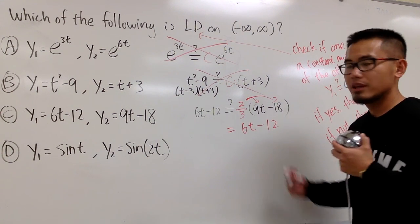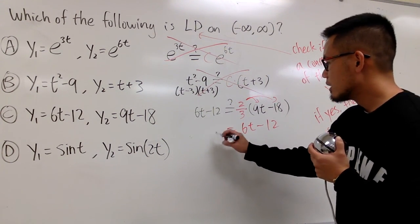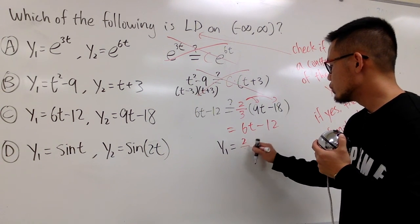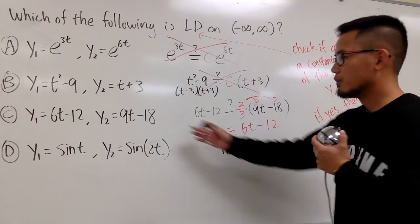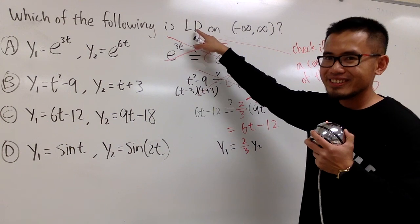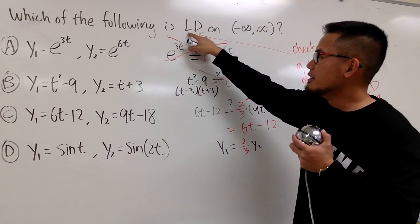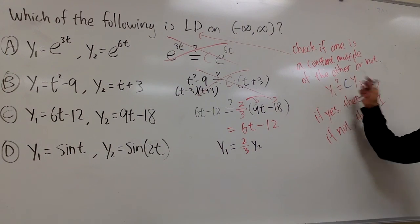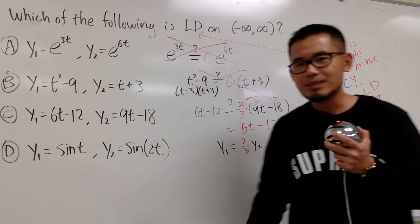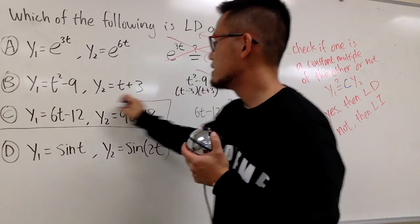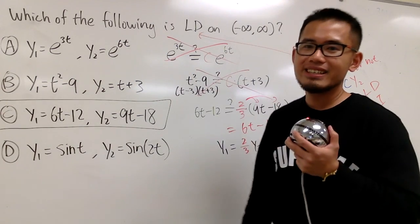2 over 3 times negative 18 is exactly minus 12. This and that match. So, I show you that y₁ is equal to 2 over 3 times y₂, for choice c. So, this is a good news, because in this question, we're looking for linearly dependent. We're looking for this to be true. One function is a constant multiple of the other. Therefore, c is the answer. c is the answer.